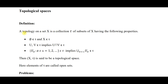The basic definition is: a topology on a set X is a collection τ of subsets of X having the following properties. First, the empty set and the whole set belong to τ. Second, if two sets U and V belong to τ, then their intersection U∩V must also belong to τ.